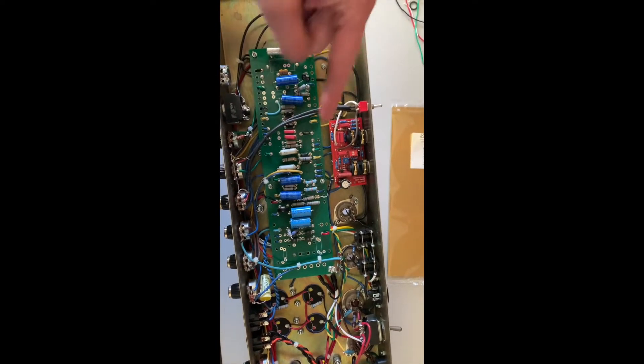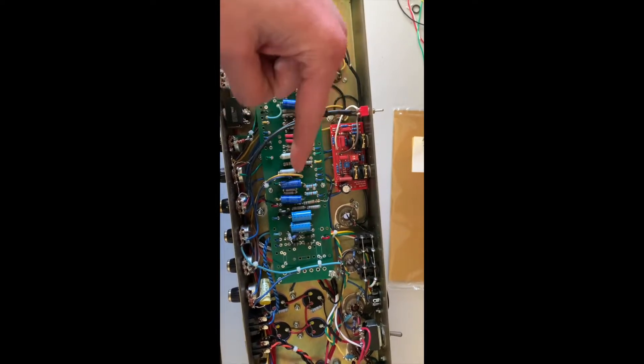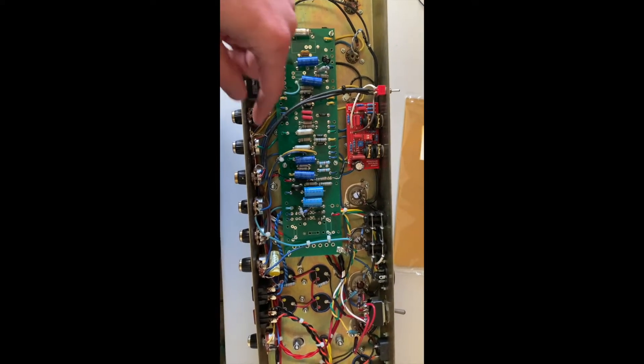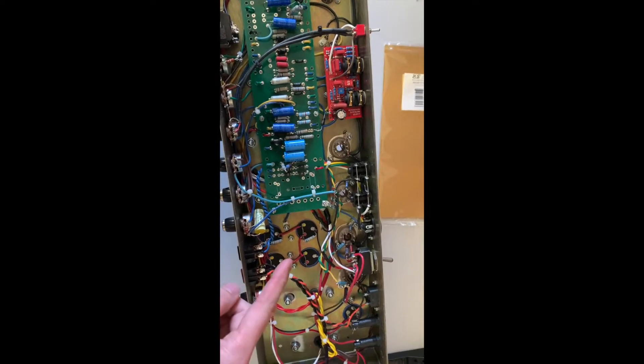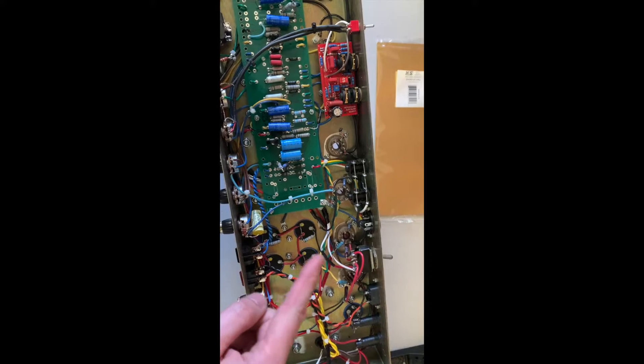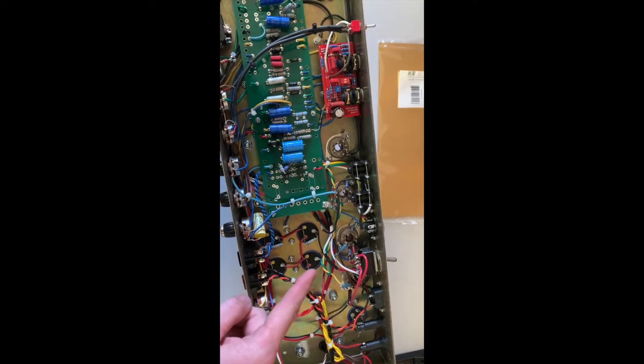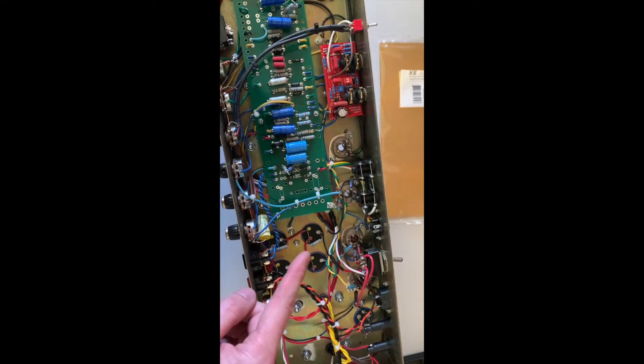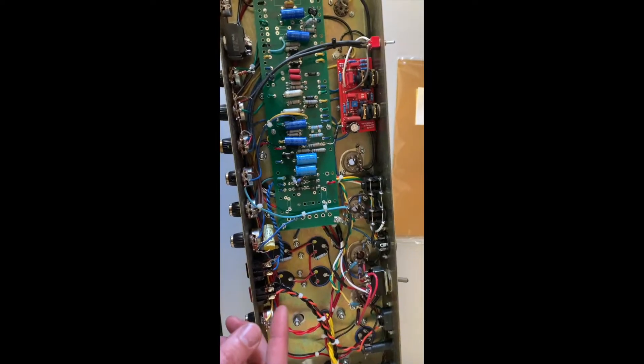We're also going to tie in any of the power feeds for the preamp section of the same ground spot. Then anything that's going to feed to higher voltage or the output section, we are going to tie to its own ground spot as well, the heater center tap and things like that. And just by doing that it should lower the noise floor.